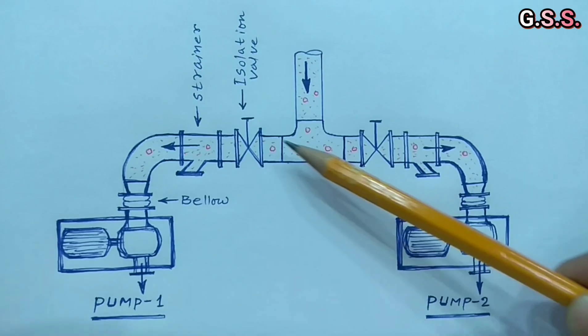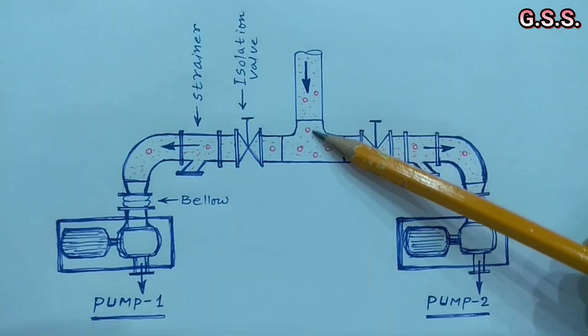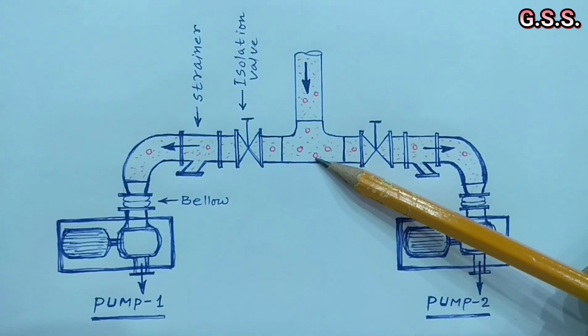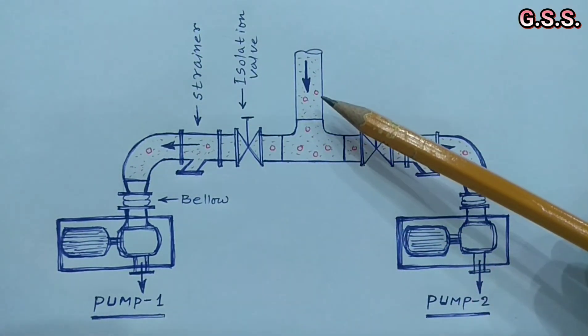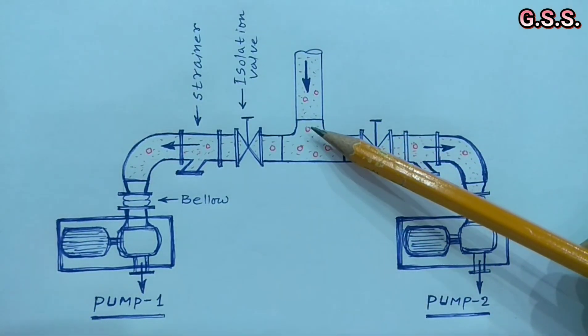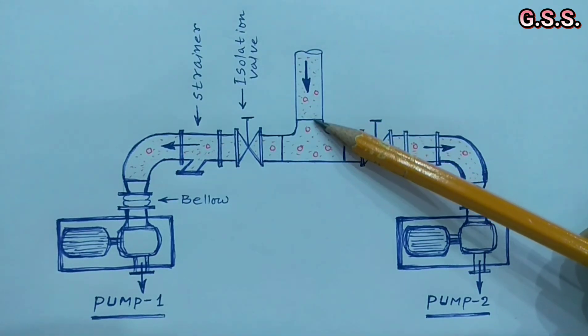But due to this T, flow from branch side hits directly on the T inside and more pressure drop occurs. Also, if any air bubble or vapor is there, liquid with air bubble or vapor will hit the T directly.